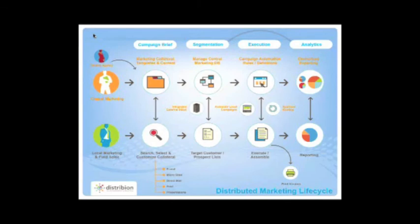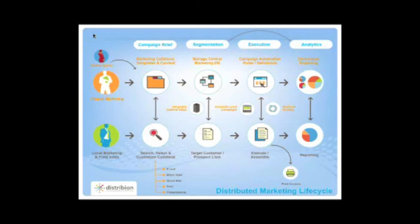From a campaign brief standpoint, we go into the segmentation part where agents are taking the target or customer list given to them by corporate, combining it with their own list, or developing one on their own — with appropriate permissions to do so. The next piece is execution, where they're assembling and executing the actual campaign — which can be via email, a full-blown microsite, direct mail, or print. And then of course closed-loop reporting, where both the local and central marketing teams can come back, reevaluate, adjust, and re-execute a campaign.